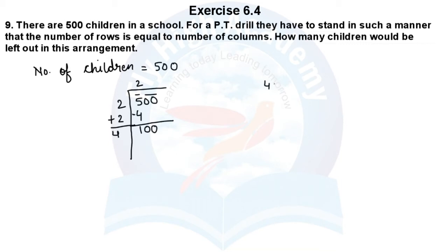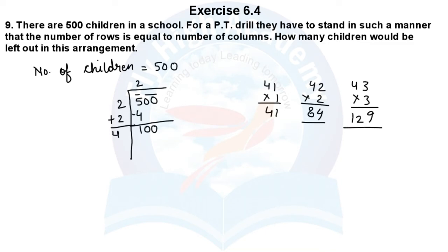41 into 1 will come 41. Then 42 into 2: 2 times 2 is 4, 2 times 4 is 8. Then 43 into 3: 3 times 3 is 9, 3 times 4 is 12. So 129 will be more than 12. So we take 84. So 84 will come from 100.